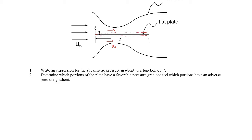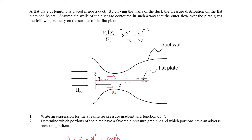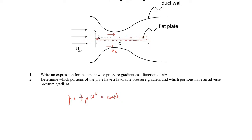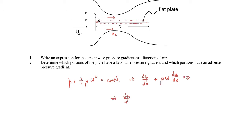Let's apply Bernoulli's equation. I'm going to neglect elevation changes since we're not told anything about them — so I'll assume everything is nominally horizontal. Taking the derivative of Bernoulli's equation gives the pressure gradient: dp/dx + ρu(du/dx) = 0, so dp/dx = −ρu(du/dx). That's how we find the pressure gradient — start with Bernoulli, take the derivative in the x direction, and get how pressure changes as a function of velocity.